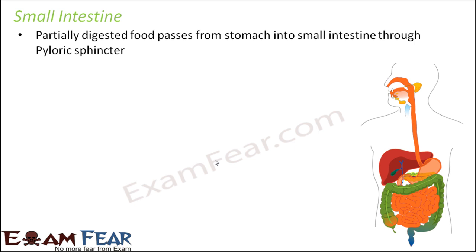So till now we saw that the food reached the stomach. The food started its journey from the mouth in the oral cavity, where a little bit of digestion happened with salivary amylase. Then it went down through the esophagus to the stomach, where partial digestion took place and a partially digested chyme was formed. Now this chyme passes from the stomach to the small intestine through the pyloric sphincter, the valve present between the stomach and small intestine. The job of the small intestine is to completely digest this partially digested food.